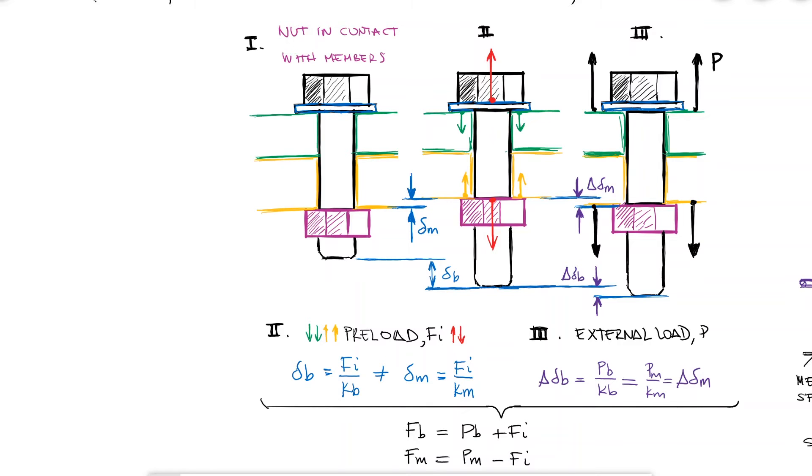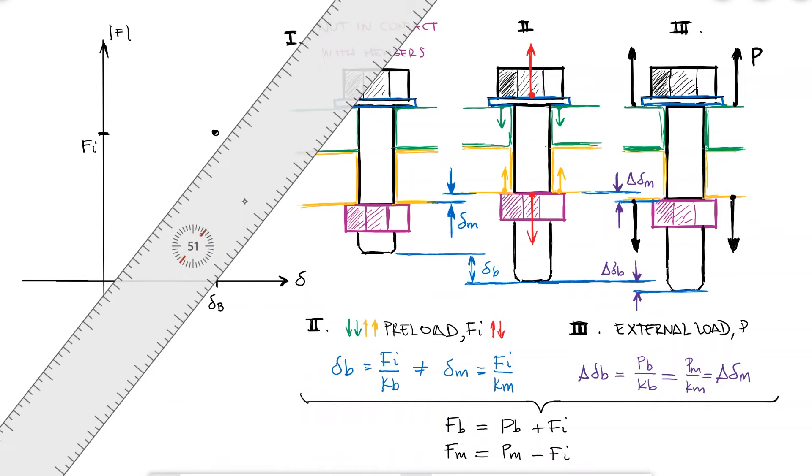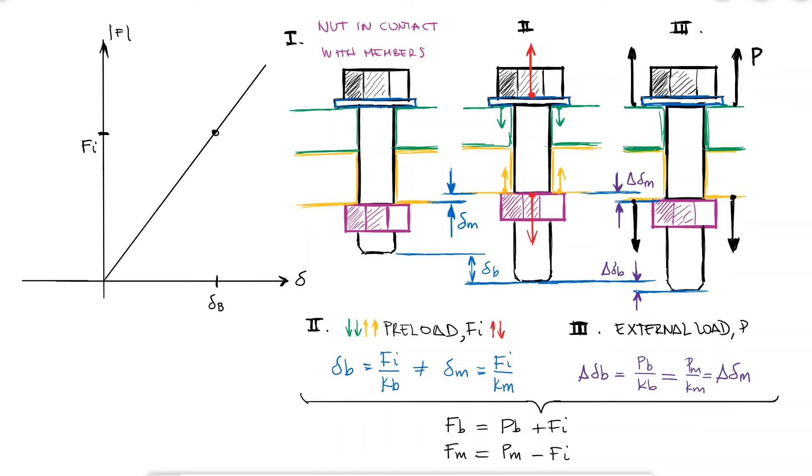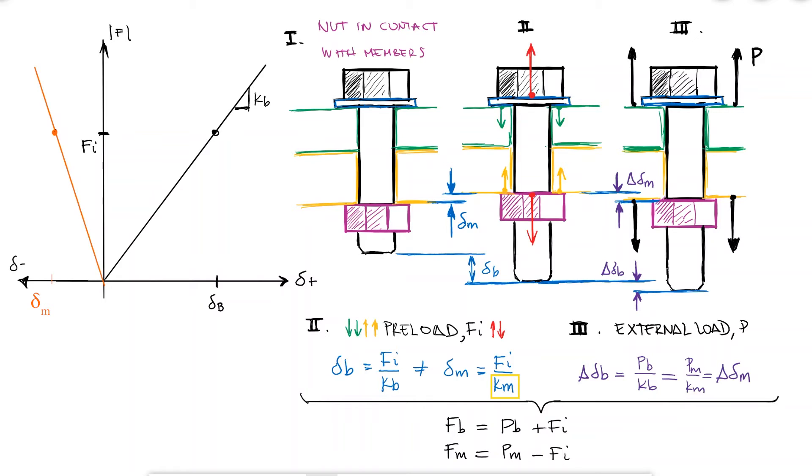This whole process can be summarized graphically by looking at the deflections on the x-axis and the force on the y-axis. When the nut is tightened, causing a preload Fi, the bolt is stretched by delta B. The relationship between the force and the deflection is equal to the bolt stiffness constant KB, and the deflection is positive because the bolt is being subjected to tension. At the same time, this preload Fi is compressing the members. For the same value of Fi, the members are deflected by delta M, and this value is negative because it's compression. The slope will most likely be distinct since the stiffness of the members will very rarely be the same as the stiffness of the bolt.